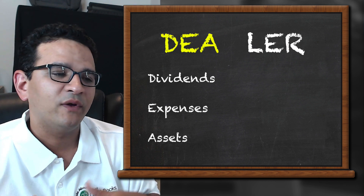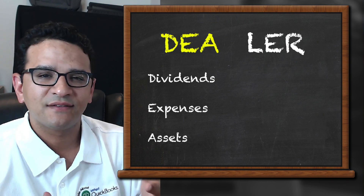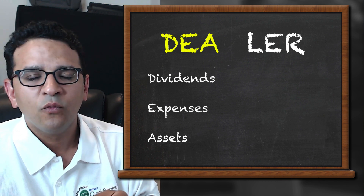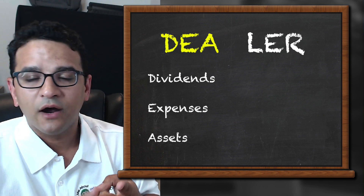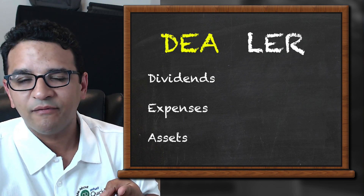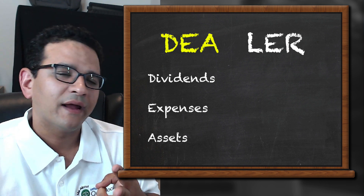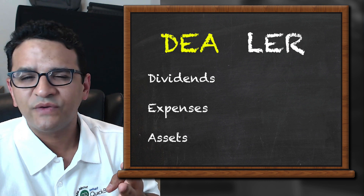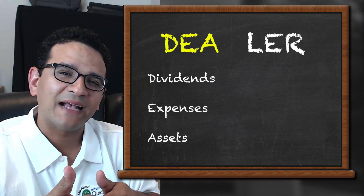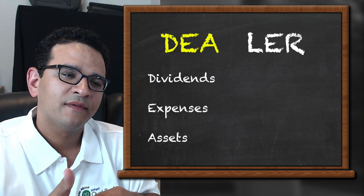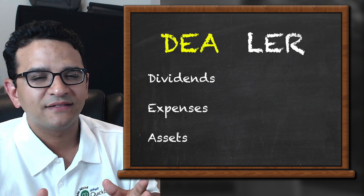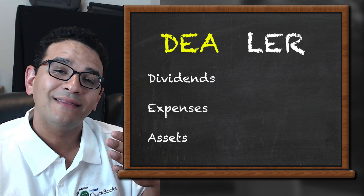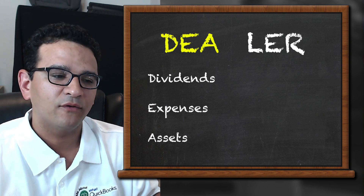A is for assets. There are many asset accounts: bank accounts, accounts receivable, inventory, loans receivable, fixed assets, and other assets. Anything that has the word 'asset' is going to be a debit account.